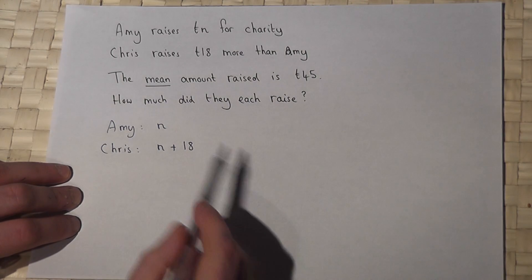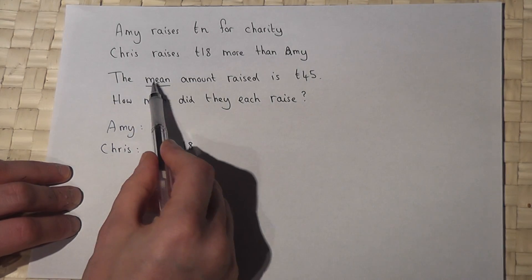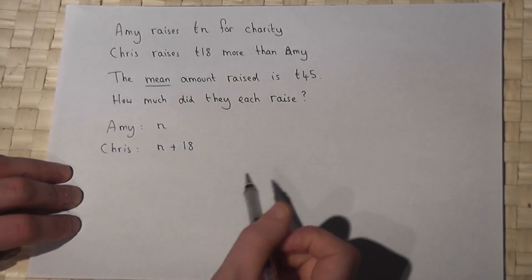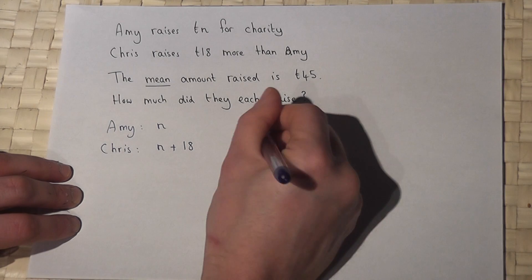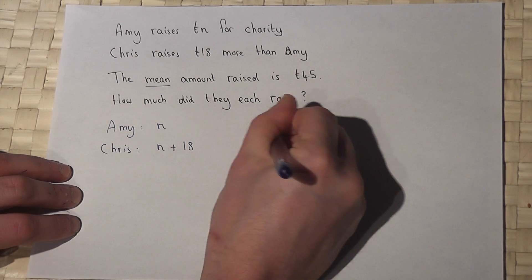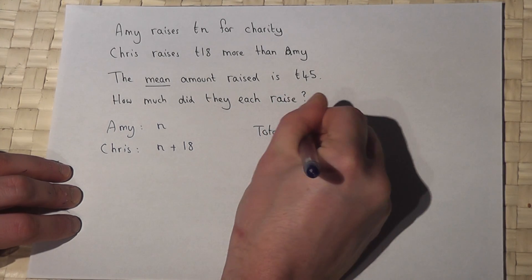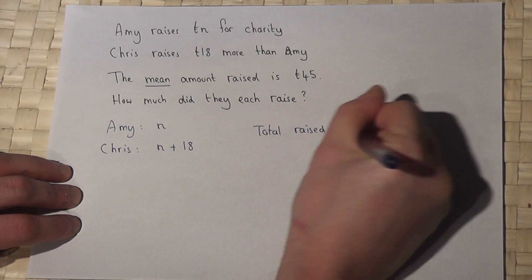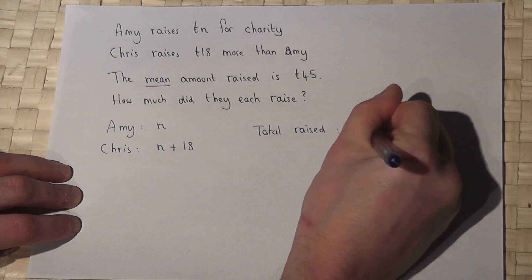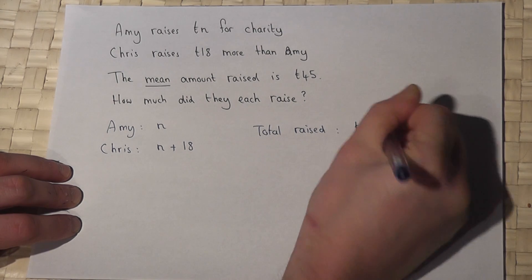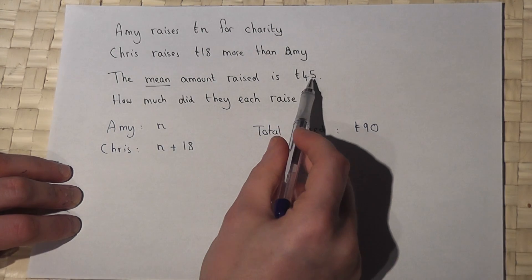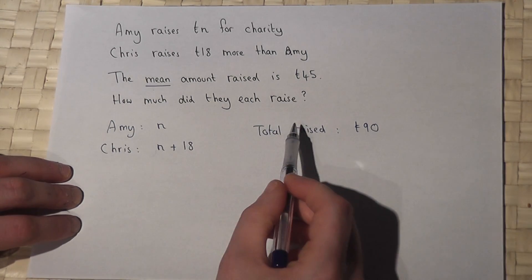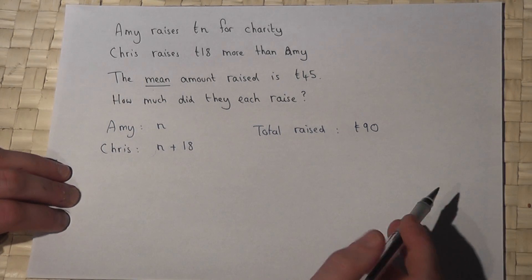Now then, the mean amount raised was 45 pounds for the two of them, so therefore the total raised must be two lots of 45, which is 90 pounds. If the mean or average is 45 of two people, then the total must be 90.